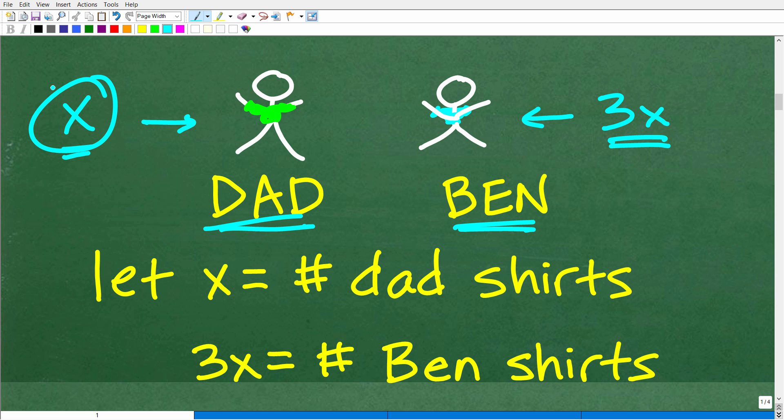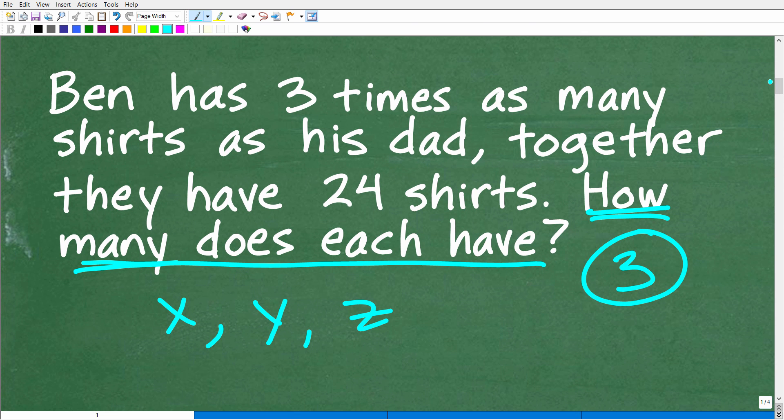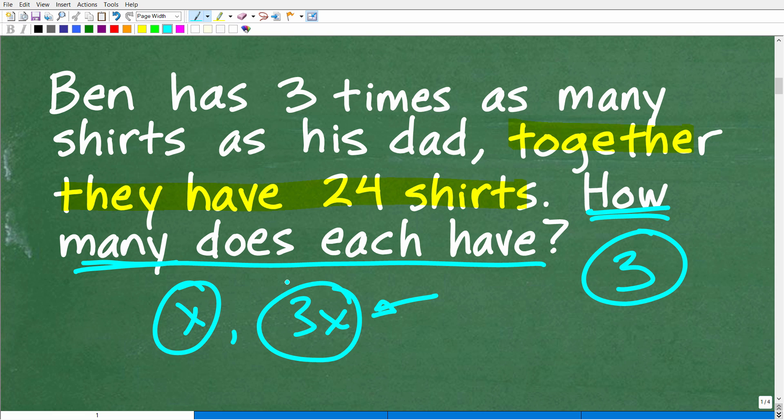So if we just say, well we'll let X equal the number of shirts that dad has. Well if the dad has X number of shirts, then Ben has 3X number of shirts. So we'll go ahead and establish these variables right now. We'll let X equal the number of shirts that dad has and 3X equals the number of shirts Ben has. Now we have to go back to the problem because it doesn't do us any good just to have these variables. We have X and 3X. Of course we're looking to solve what these amounts are, but we can't determine the value of a variable unless we can construct an equation.